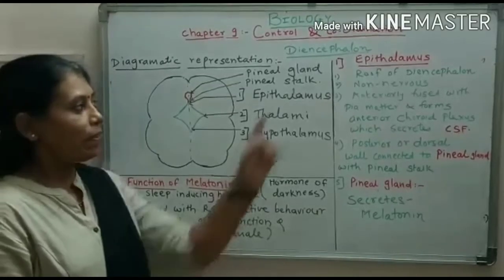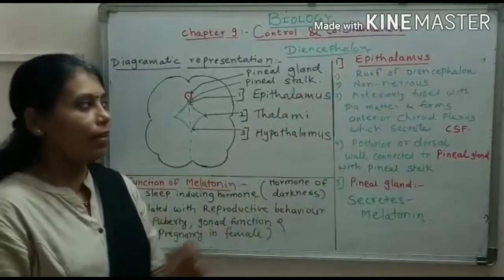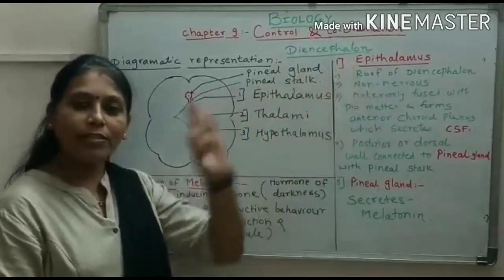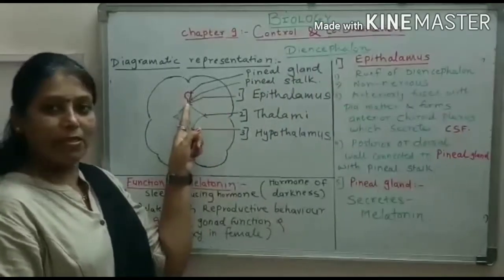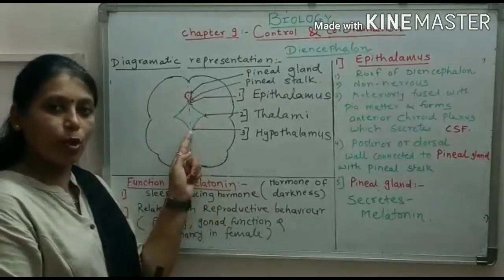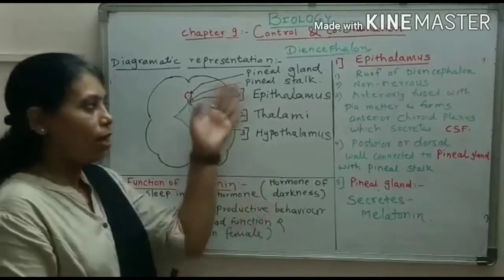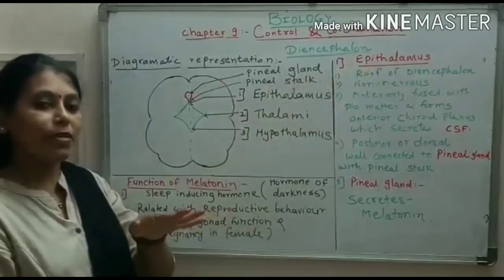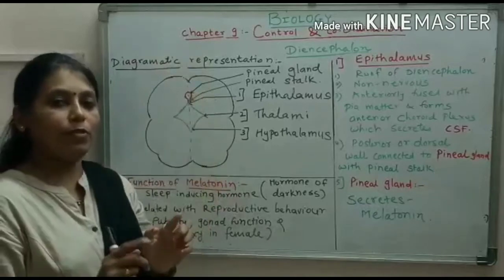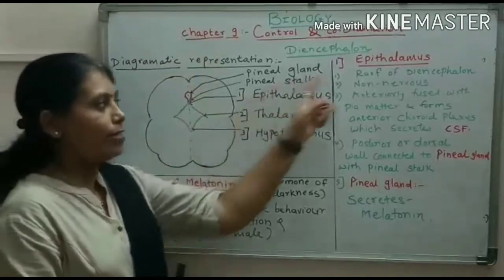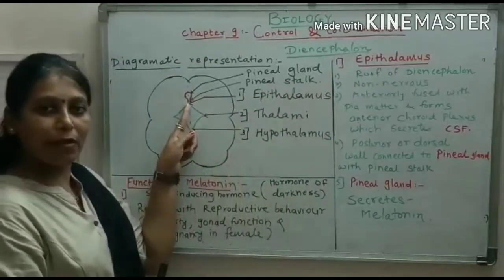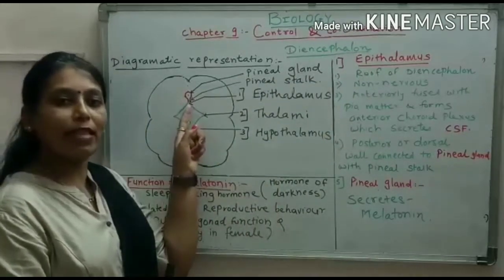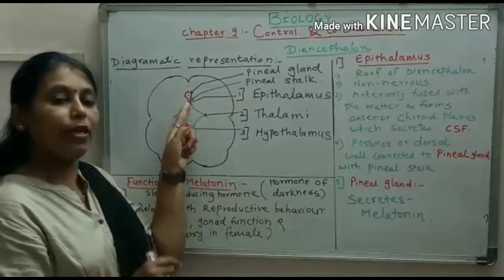Now we will study epithalamus. Epithalamus is the part of Diencephalon present above — like the roof of a room. It is non-nervous, meaning neurons are not present in this particular area. Here exactly the epithalamus is present in the diagram.